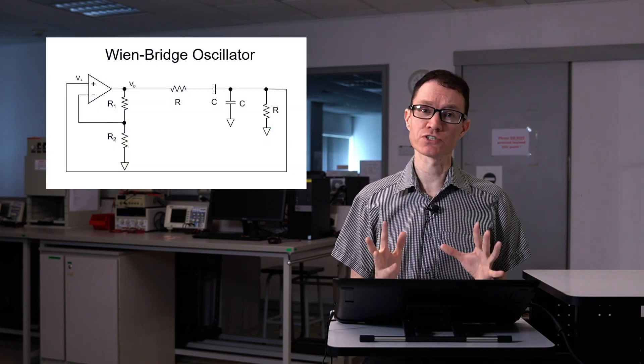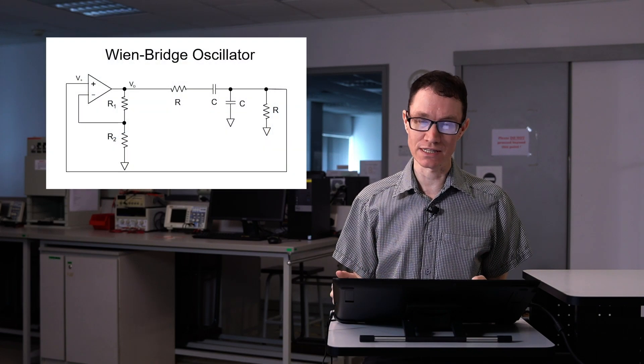That's what we have here in this particular circuit. It's called a Wien-Bridge oscillator. Let's derive the frequency that will come out of this oscillator.